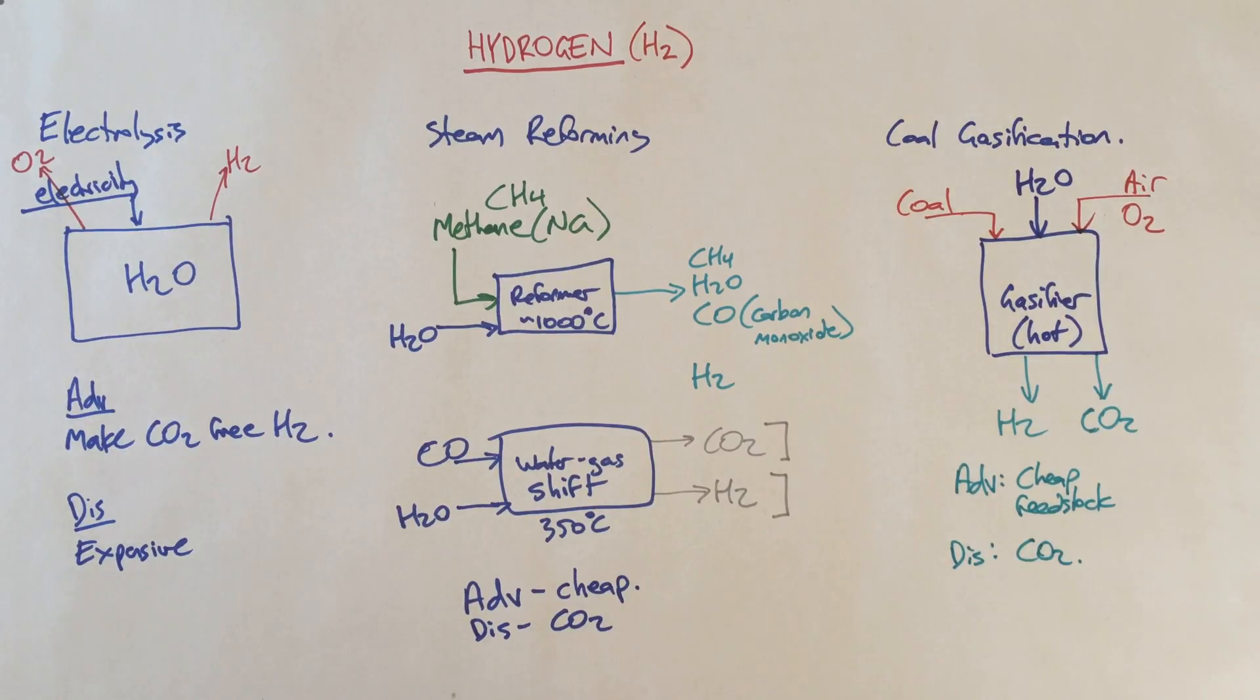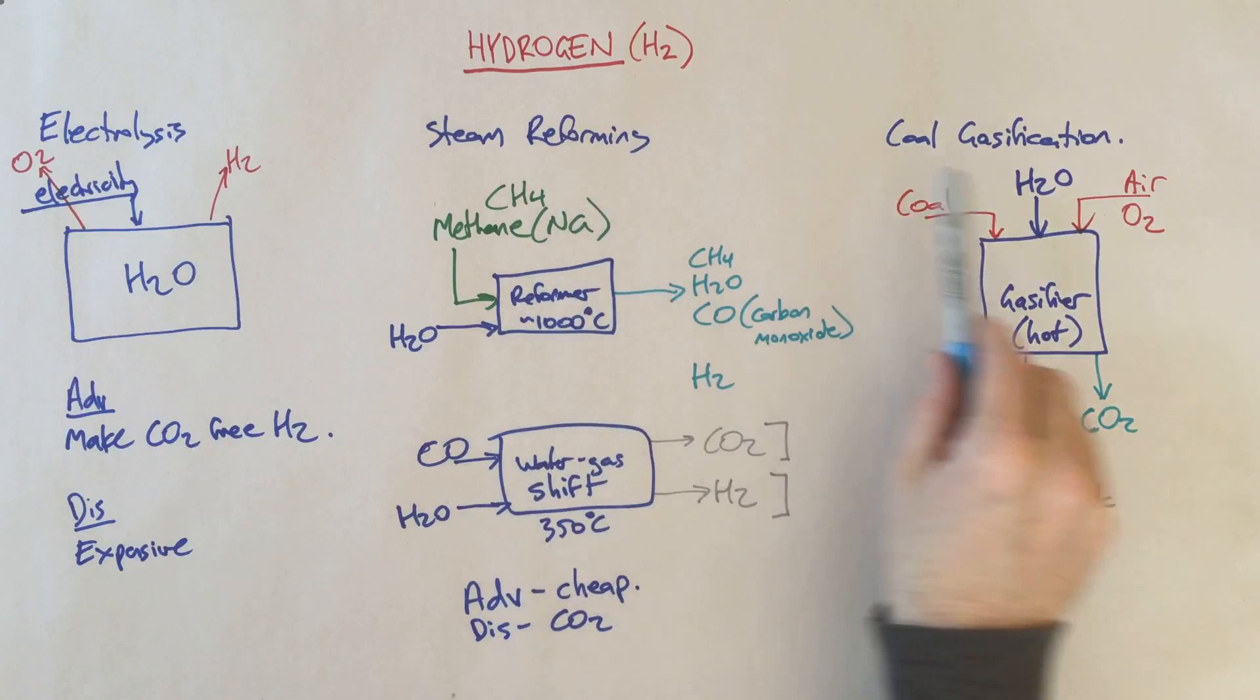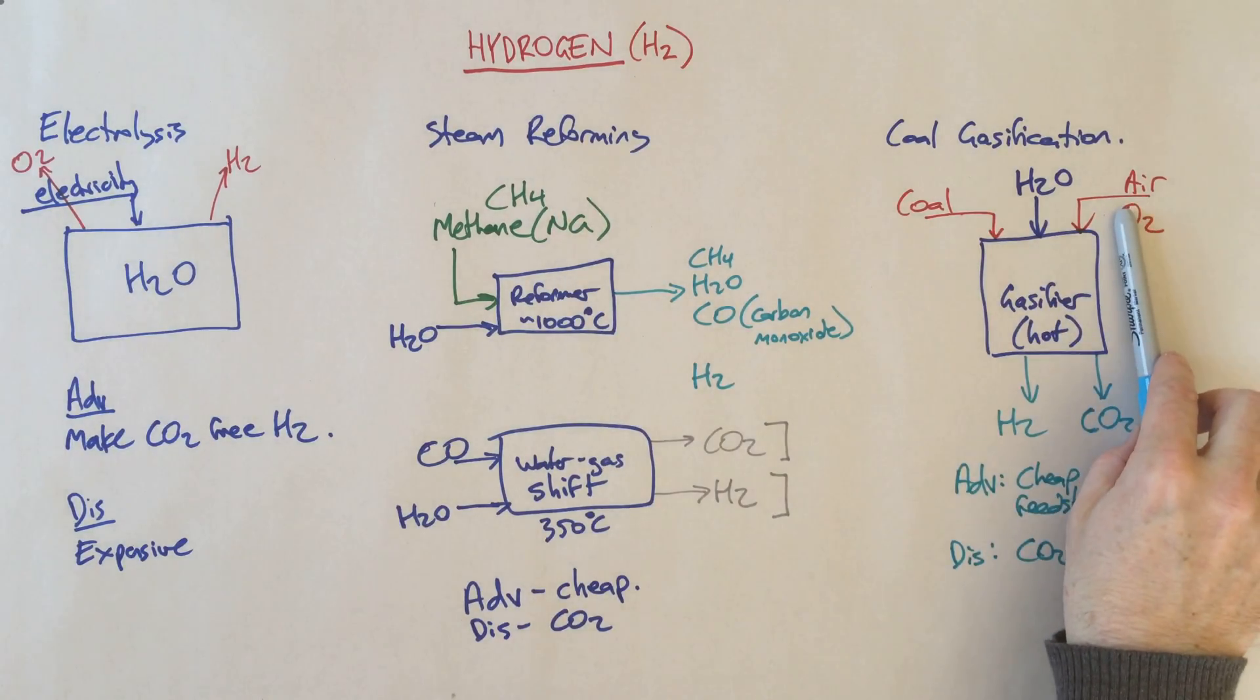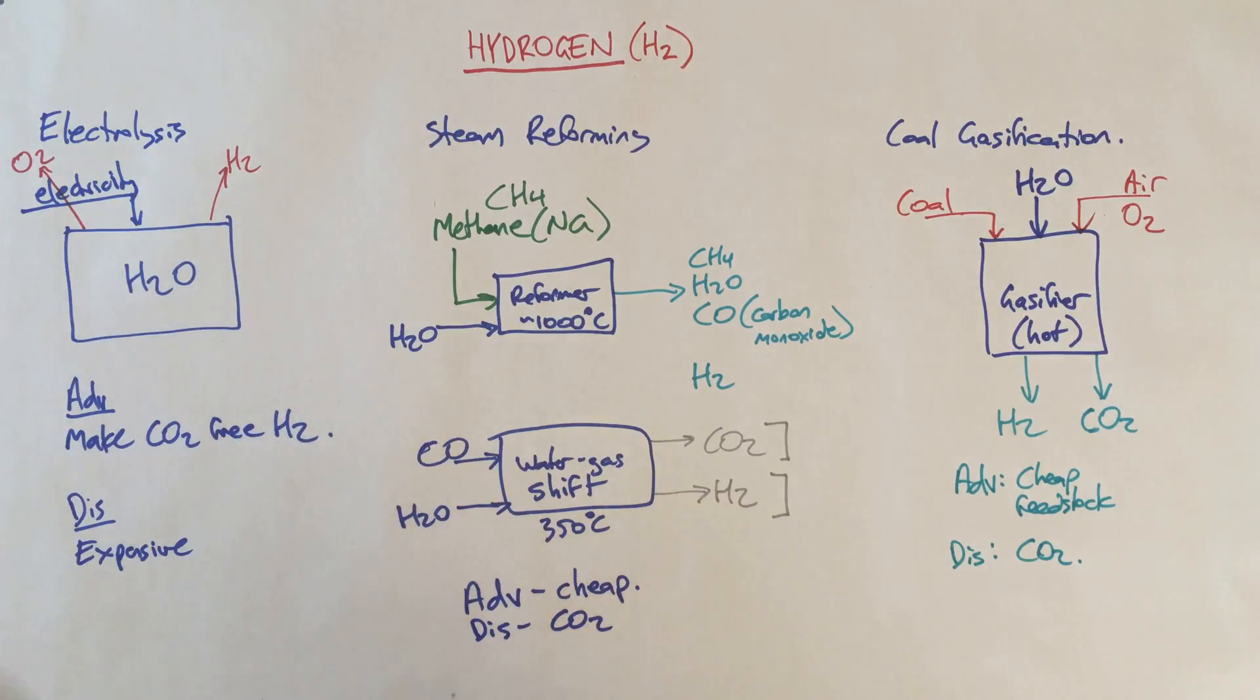Historically steam reforming has been the most popular way of making hydrogen. Gasification is probably second most popular and electrolysis is a long way behind. However, because people are interested in making hydrogen without the CO2 impacts, electrolysis is starting to gain a foothold.